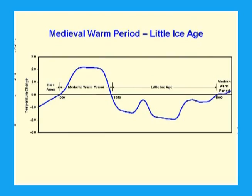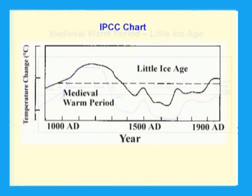The previous graph is derived from this graph produced in the 1990 report of the Intergovernmental Panel on Climate Change. The medieval warm period has become inconvenient to the IPCC, so they haven't mentioned it since.